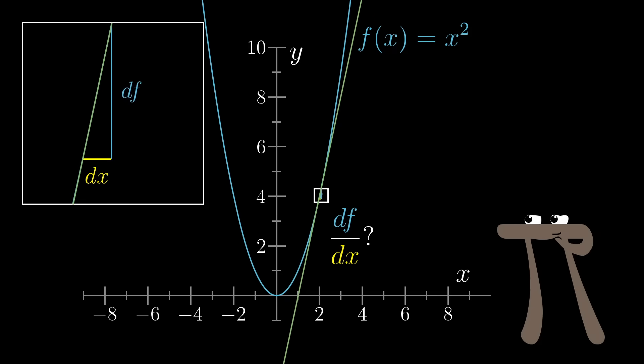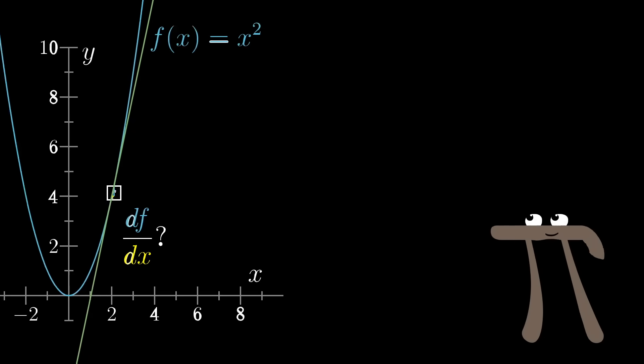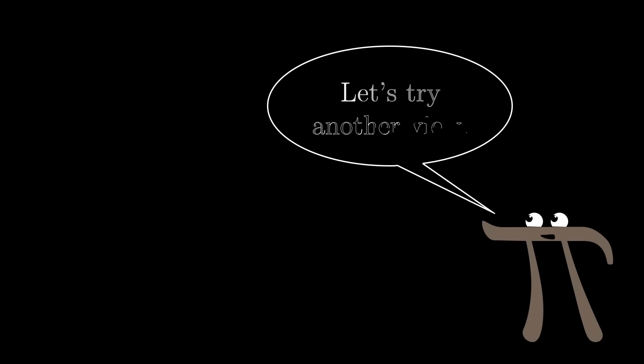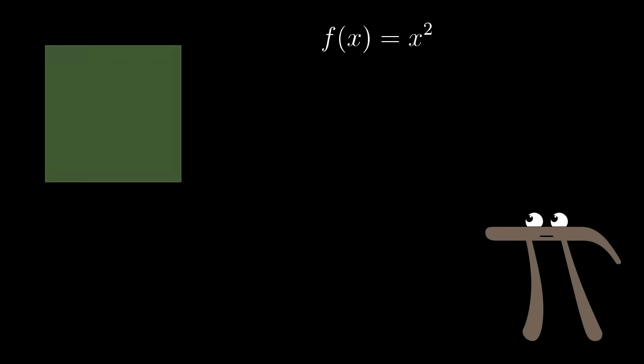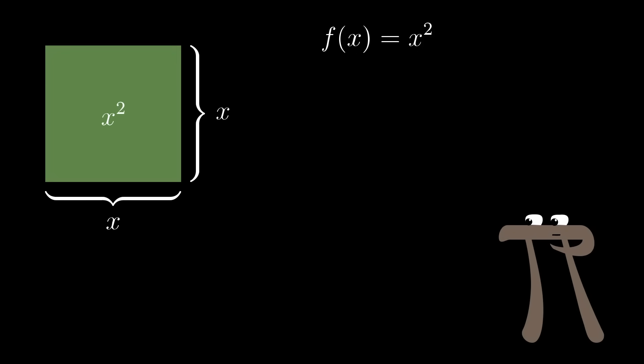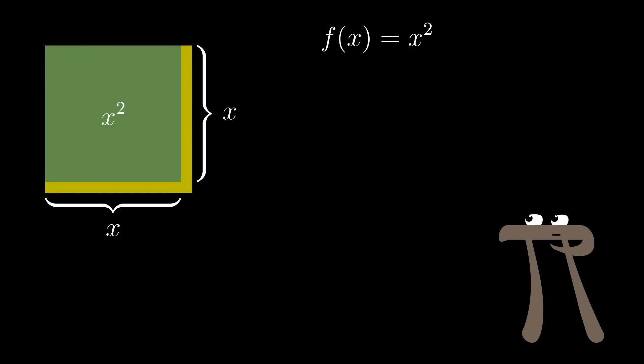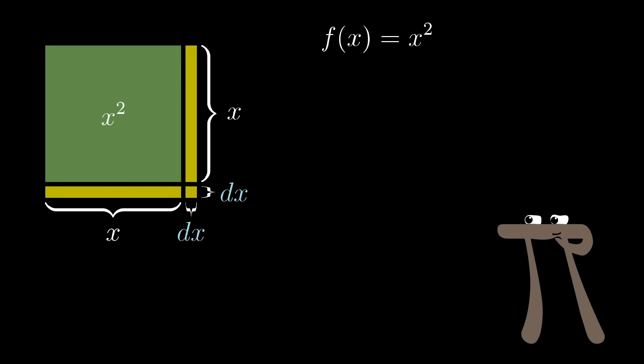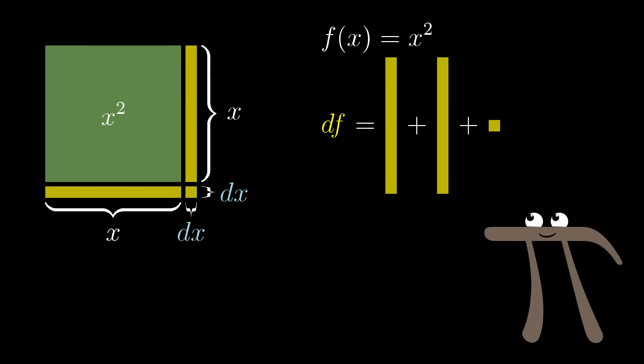But looking at graphs isn't generally the best way to understand the precise formula for a derivative. For that, it's best to take a more literal look at what x squared actually means. And in this case, let's go ahead and picture a square whose side length is x. If you increase x by some tiny nudge, some little dx, what's the resulting change in the area of that square?